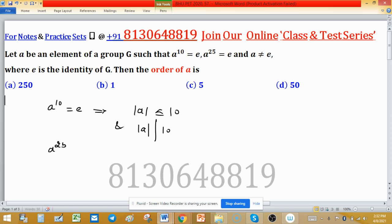Second thing is A raised to the power 25 is also identity. This implies that order of A is less than or equal to 25, and order of A will divide 25.